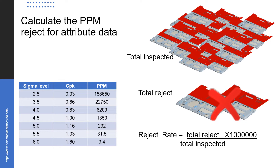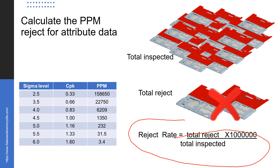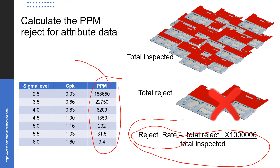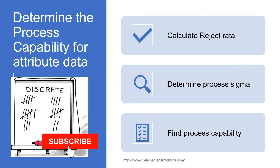In order to know the process capability value for attribute data, we need to calculate the reject rate — such as from an inspection process. Once we have the reject rate, we can find the CPK value using statistical software or manually through a z-table, matching the PPM to the CPK value.